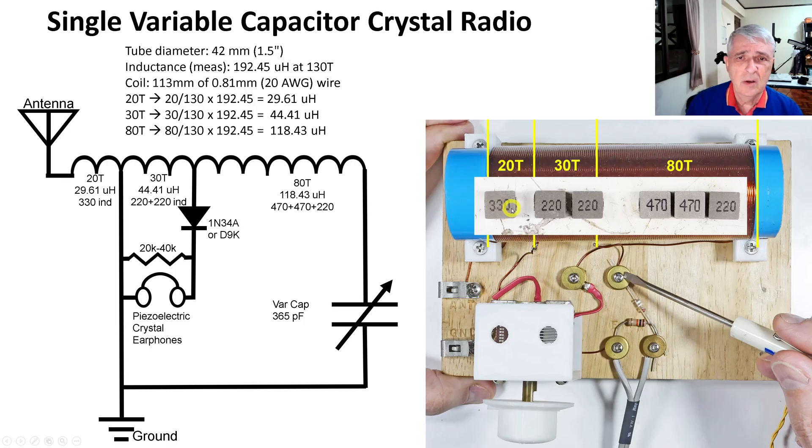So the best I can do is 33 microhenries here, and then we repeat that over again for the 30 turns, and I got 44.41 microhenries, and out here I got 118.43. So this combination should come pretty close, close enough to work. So this is the theory. This is the calculation. Nothing to it but to go do it.